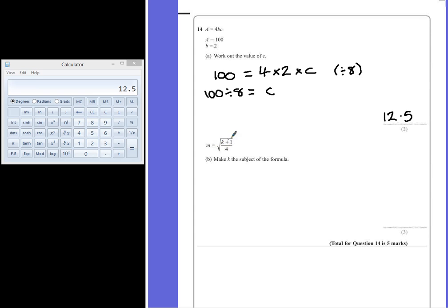Start with the square root symbol by squaring everything. If we square the left, we'll end up with M squared. The square root symbol disappears and we're left with K plus 1 over 4.